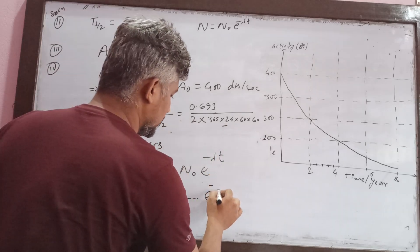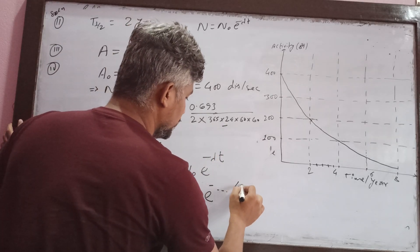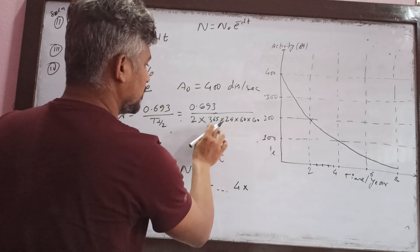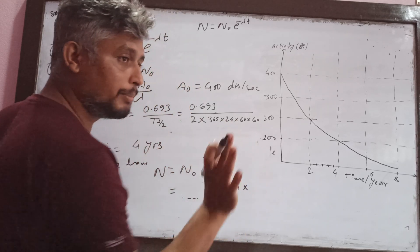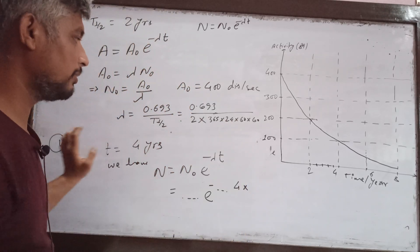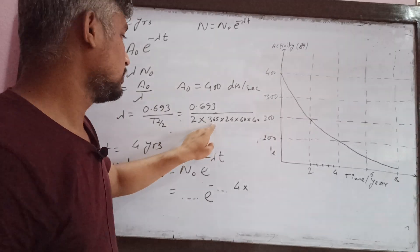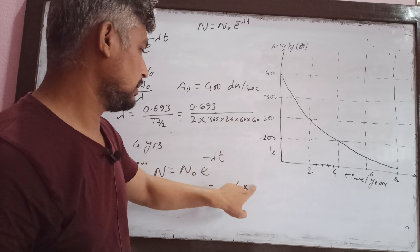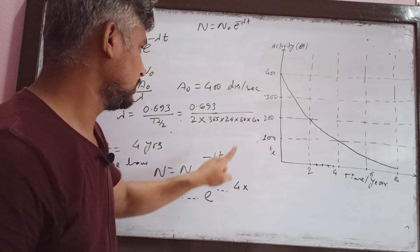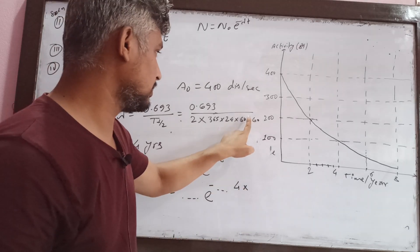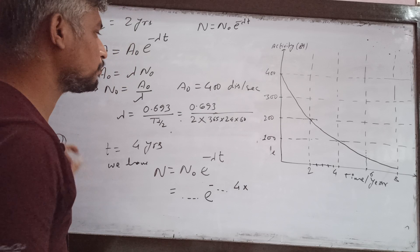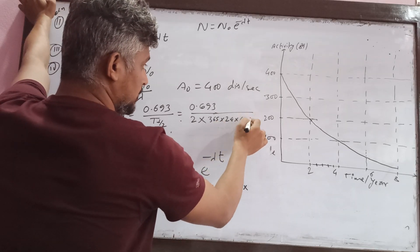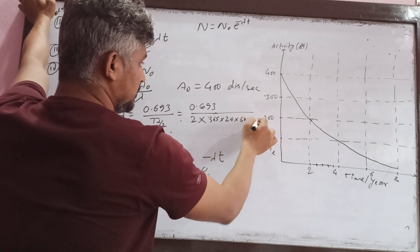We will take the value for 4 years. Converting: 4 years times 365 days times 24 hours times 60 minutes times 60 seconds gives the time in seconds. Substitute this into the equation to get the number of atoms after 4 years.